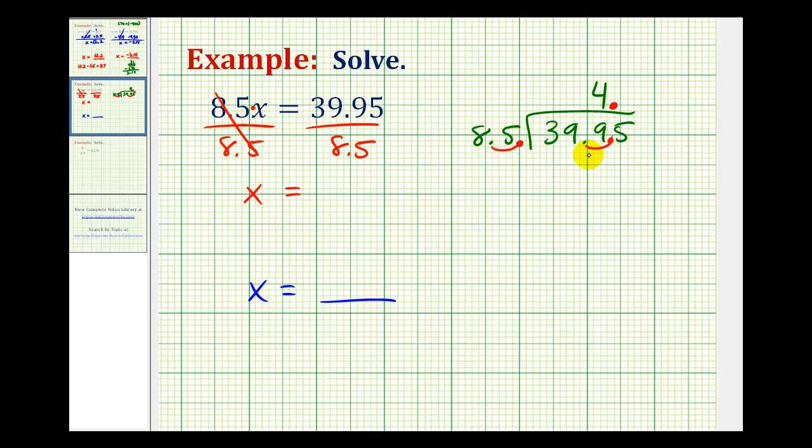4 times 5 is 20, carry a 2. 4 times 8 is 32, plus 2, that's 34. If this difference is less than 85, the 4 is correct. We have 9 minus 0, that's 9, 9 minus 4, that's 5, and 59 is less than 85, so the 4 is correct.